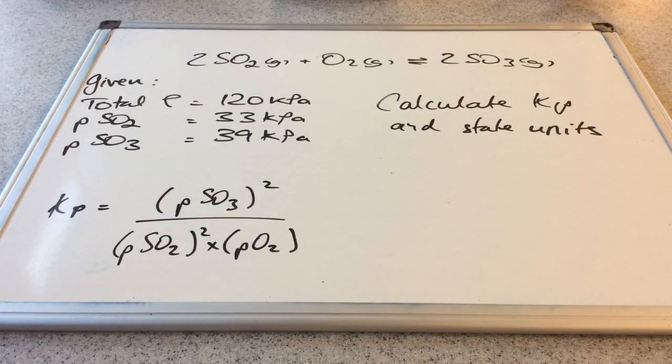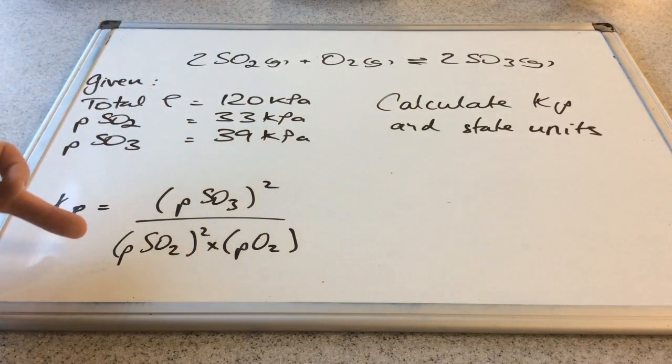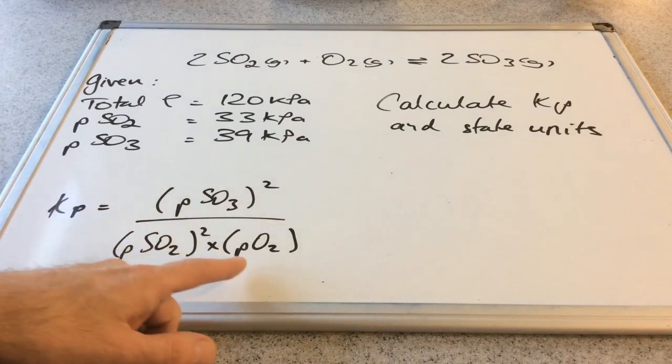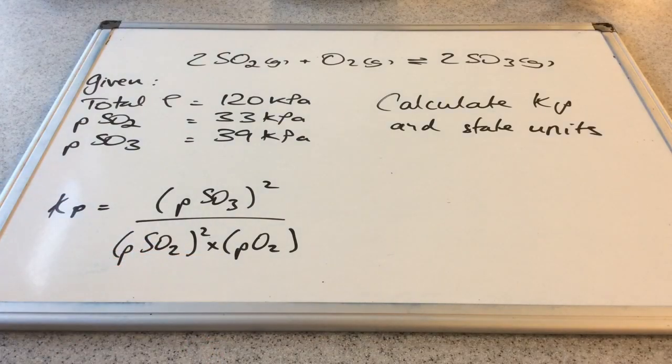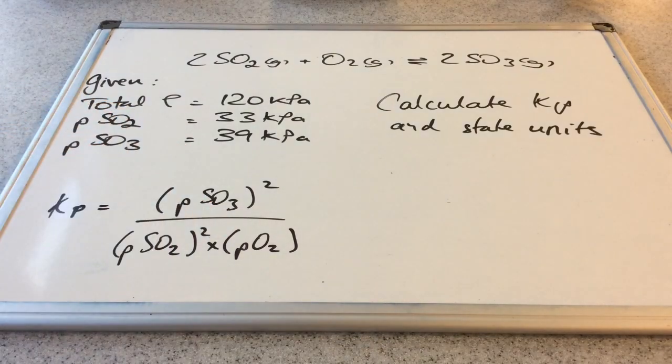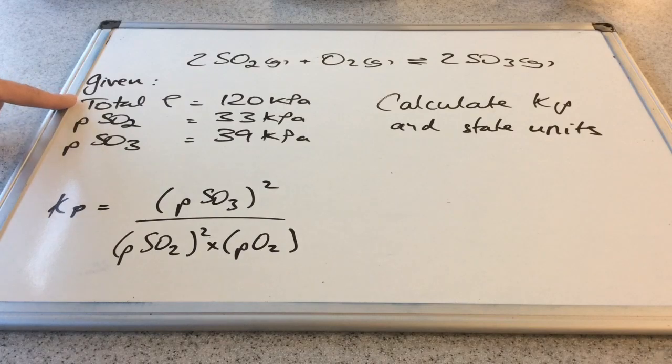So obviously, the first thing we need to do is write the expression for KP. So that's going to be the partial pressure of sulphur trioxide squared all over the partial pressure of sulphur dioxide squared multiplied by the partial pressure of the oxygen. So to calculate KP, we need to know all the partial pressures. Well, we know two of them, but we also know the total pressure.